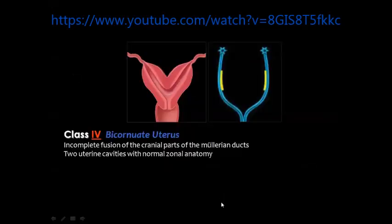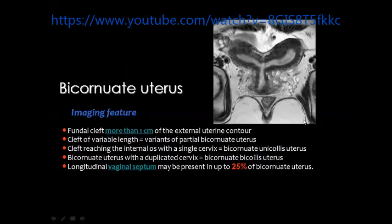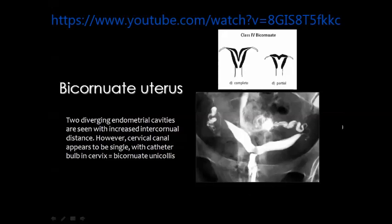In bicornuate uterus there is some fusion between the bodies of the uterus and there may be a single cavity at a distance from the fundus, or two separate cavities and two separate cervical canals. The appearance of bicornuate uterus shows a fundal cleft more than 1 cm from the external uterine contour. The bodies of the uterus may fuse into a single cervical canal — this is called bicornuate unicollis uterus. Sometimes you have two separate uterine bodies and two separate cervical canals — bicornuate bicollis uterus.